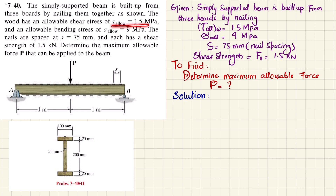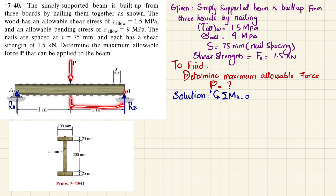We will find P for the allowable shear stress, allowable bending stress, and shear flow criteria, then select the governing one. First step: remove the pin support at point A to get reaction force Ra, and remove the roller support at point B to get Rb. Using the equation of equilibrium — sum of all moments about point B equals zero, taking counterclockwise as positive — one moment is P times its perpendicular distance of 1 meter, which is counterclockwise and therefore positive.